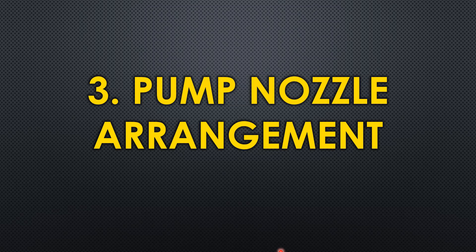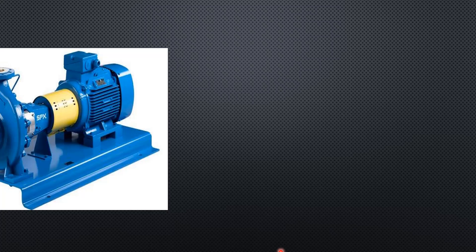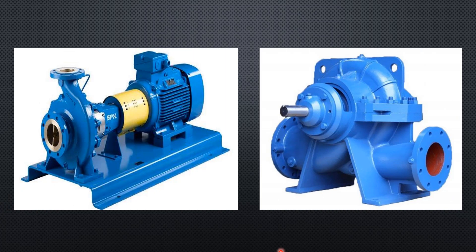The third parameter is the pump nozzle arrangement. Comparing two photos: one pump has a front entry and top discharge, while another has a side entry and side discharge. Only when you know the nozzle arrangement can you plan the piping correctly. You cannot simply copy the piping of one pump to another, because nozzle arrangements vary with pump type and manufacturer. Don't forget to evaluate the nozzle arrangements.